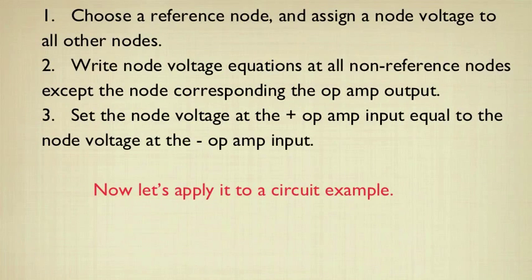Thus, we have a three-step approach now for solving for the node voltages in an op-amp circuit. One, choose a reference node and assign node voltages. Then write node voltage equations at the nodes except for the node corresponding to the op-amp output. Set the two node voltages at the plus and minus inputs equal to each other, and then solve those equations for the node voltages. Once you have the node voltages, you can use them to solve for any other circuit parameter.